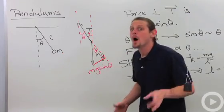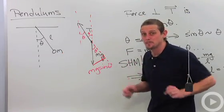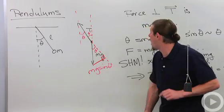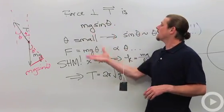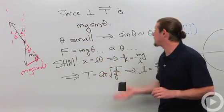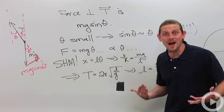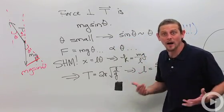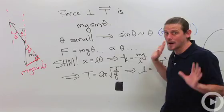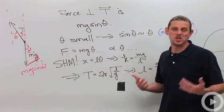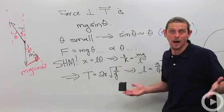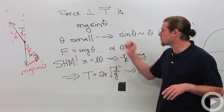Now that's kind of complicated, but we can make a nice simplification when theta is small. If theta is small, then it turns out that sine theta is approximately equal to theta. Now this only works in radians. You've got to be in radians, but that's actually what we're going to want to be in anyway.